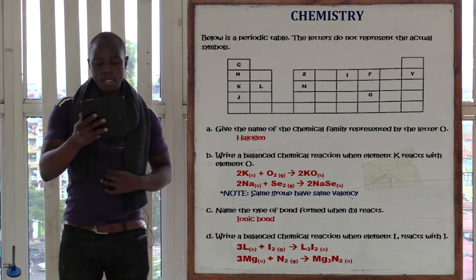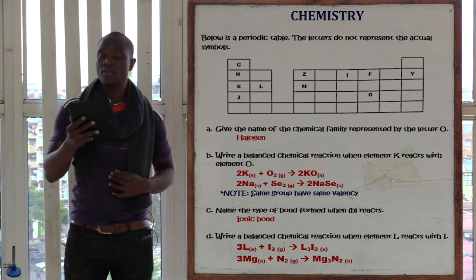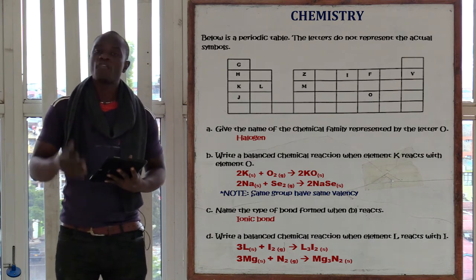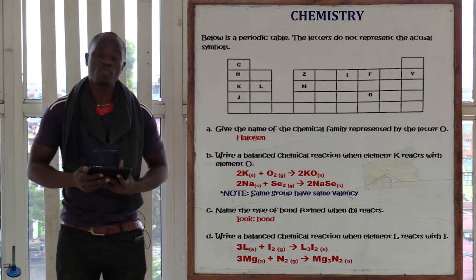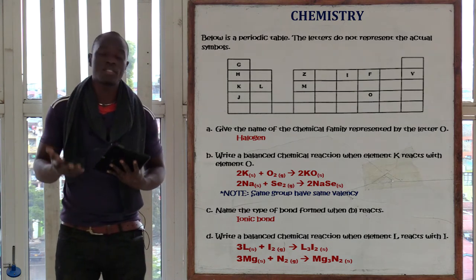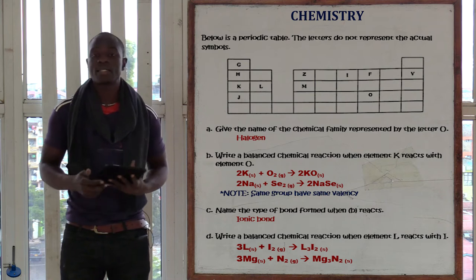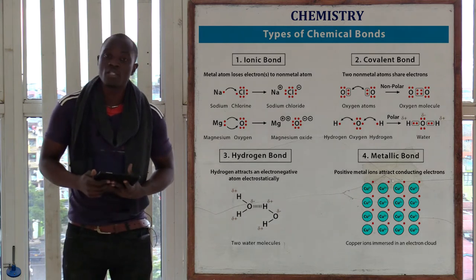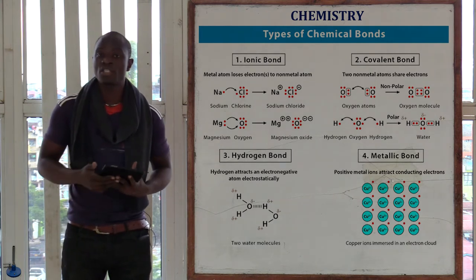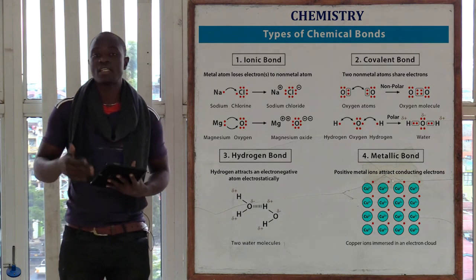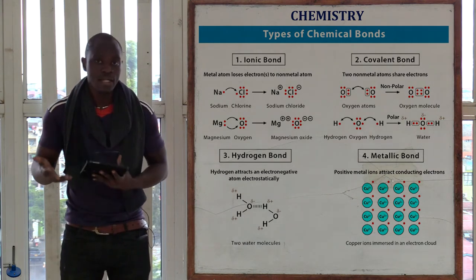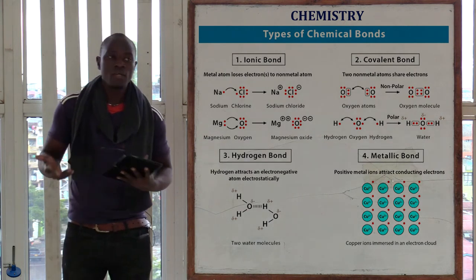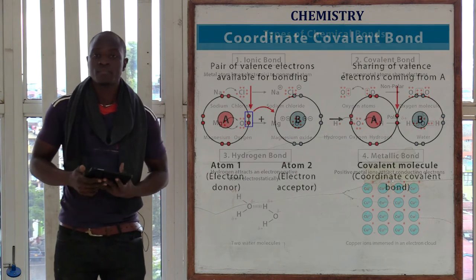The next question asks: name the type of bond formed when K reacts with O. Since a metal reacts with a non-metal, the type of bond formed is an ionic bond. A covalent bond is formed when non-metals react — for example, the oxygen molecule. An ionic bond is formed when a metal and a non-metal react. A metallic bond is formed when two metals react.